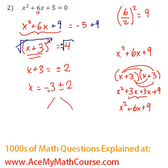Negative 3 plus 2 which is negative 1, and we have negative 3 minus 2 which is negative 5. So x is equal to negative 5 and negative 1. That's it.